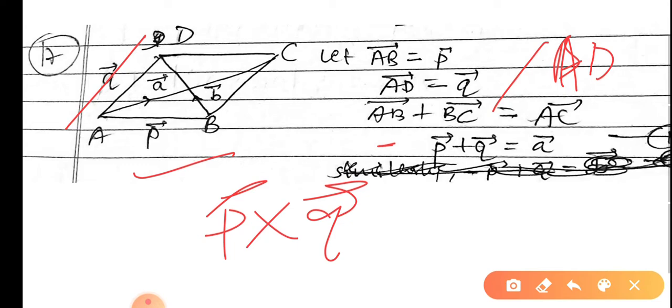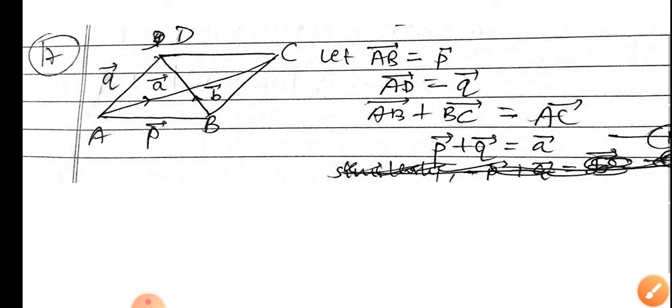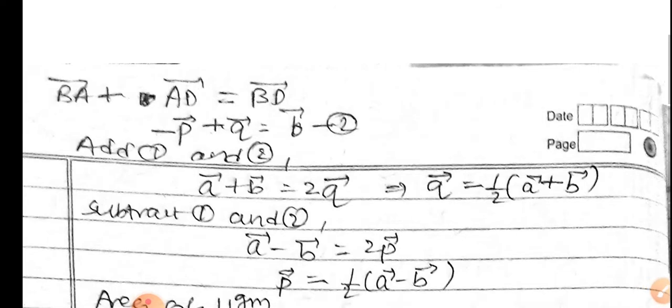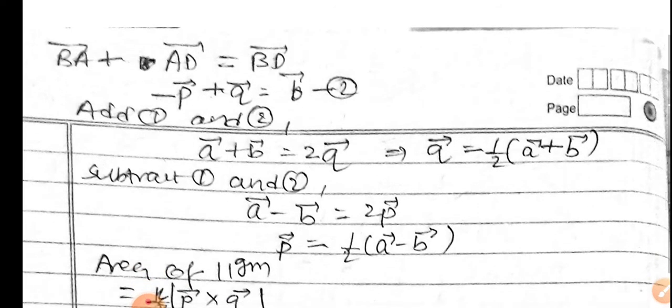AC equals 2a. Similarly, BA + AD equals BD, which means a - b equals b.